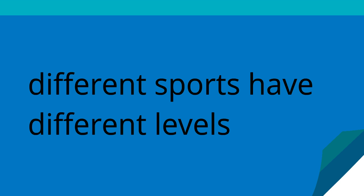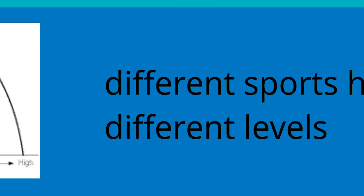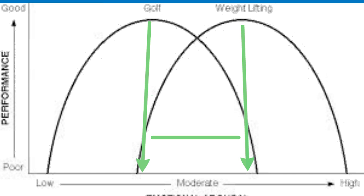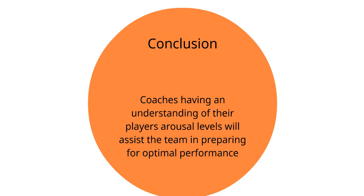Different sports require different levels of arousal for optimal performance. For example, the athlete in golf requires different levels of arousal compared to the athlete in weightlifting. The challenge for coaches and athletes is to determine each individual athlete's optimal arousal levels. Coaches should have an understanding of their players' anxiety, stress, and arousal levels as it will assist the team in preparing for optimal performance. Because different sports and different individuals have different arousal levels, coaches need to closely monitor players and potentially use a variety of approaches to get the arousal levels just right for each player.